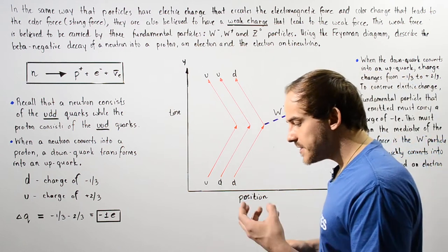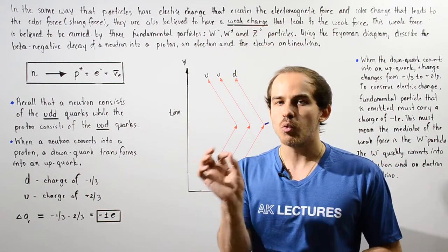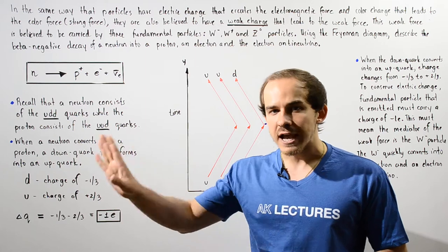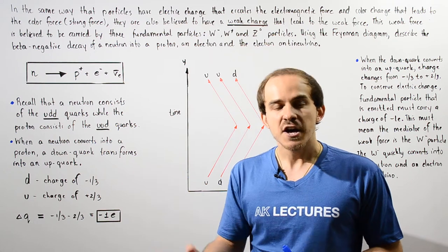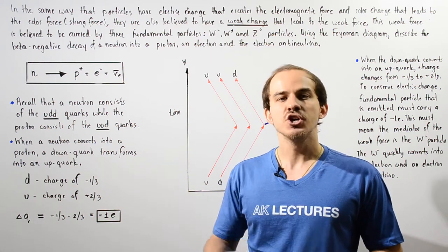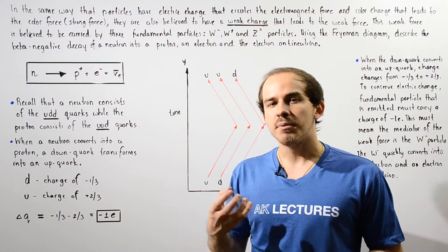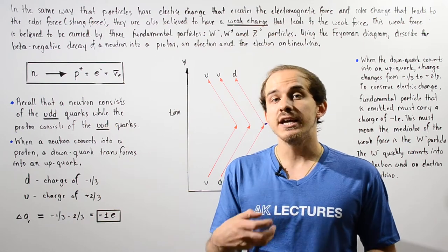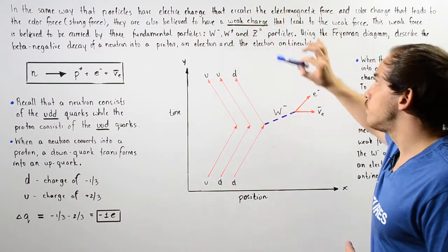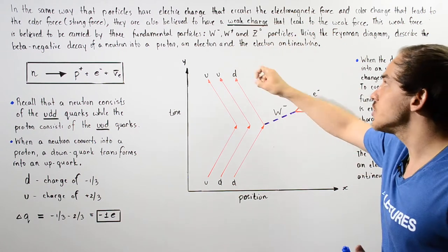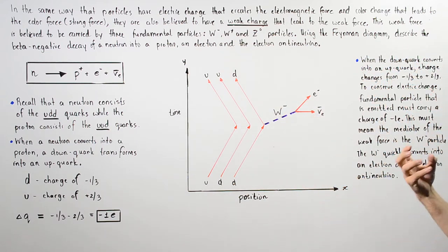In a very similar way, we believe that yet another type of charge exists known as the weak charge, that is different from the electric charge or the color charge. This weak charge that particles have basically leads to the weak force, also known as the weak nuclear force. The three fundamental particles that are believed to carry or mediate the weak nuclear force are the W negative, the W positive, and the Z neutral particles. The Z has no charge, the W positive has a positive one charge, and the W negative has a negative one charge.